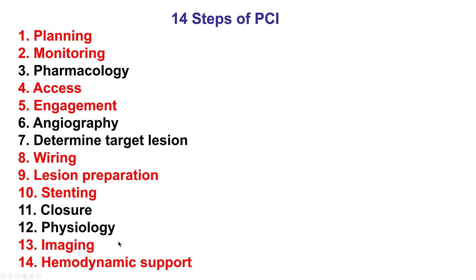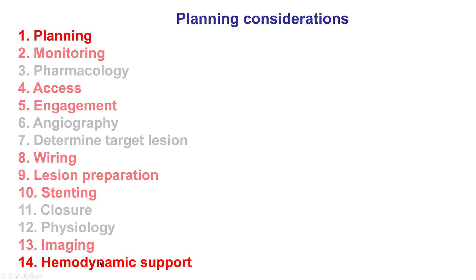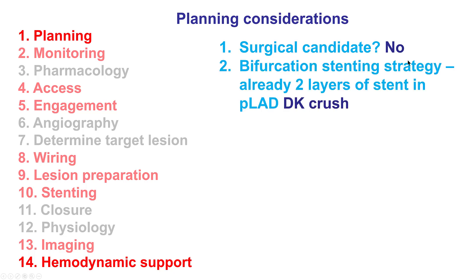These are the 14 steps of PCI, and we'll discuss briefly how each of those steps apply to this particular patient. In terms of planning, the patient was not a good surgical candidate. If we had to do stents, the DK CRUSH technique would be the one we would choose based on the good outcome data.